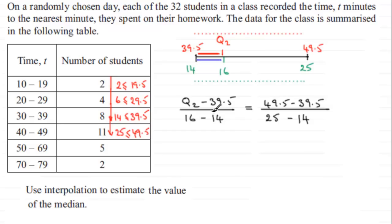All I need to do now is rearrange this to work out what Q2 is. So I've got 16 take 14, which is going to be 2. I'm going to multiply both sides by this value and then add the 39.5 on. So I've got 2, coming from the 16 take 14, multiplied by this fraction. The top here is going to be 10 and the bottom is going to be 11. So it's 2 times 10/11, and then I add the 39.5.